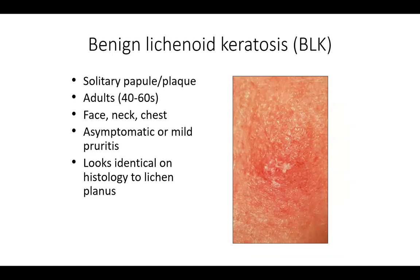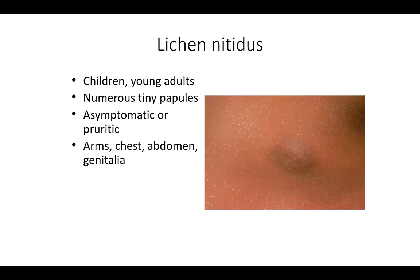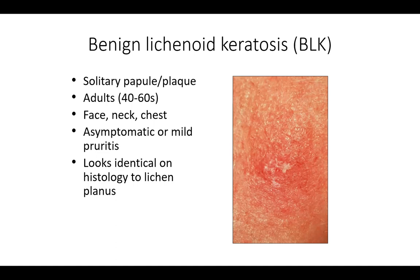A single lesion presenting as a scaly erythematous papule can present anywhere, classically in 40-to-60-year-old adults on the face, neck, and chest. It can look like a basal cell carcinoma and may be a benign lichenoid keratosis. On histology, it looks very similar to lichen planus on H&E, helping confirm the diagnosis and reassuring the patient there is no malignancy. We're skipping over lichenoid keratosis pathology because it looks exactly like lichen planus.